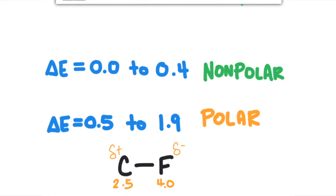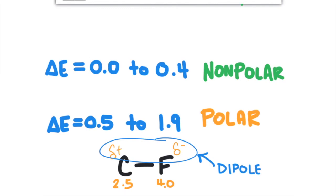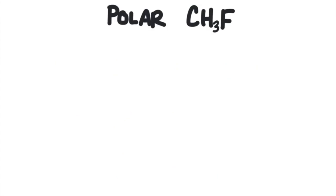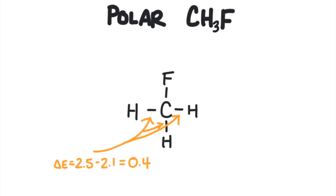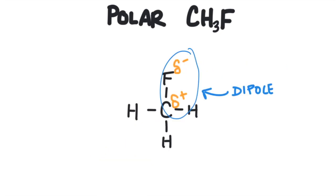A molecule could have polar bonds but be non-polar overall. To be polar, the molecule must have an overall dipole — a dipole means separation of charge, where one side of the molecule has a slightly negative charge and the other side is slightly positive. Here's an example of a polar molecule: CH3F. Carbon and hydrogen form non-polar bonds, but carbon and fluorine form polar bonds. The delta E between carbon and hydrogen is 0.4, and the delta E between carbon and fluorine is 1.5, which makes a polar bond. So since we have a dipole in this molecule — separation of charge — this molecule is a polar molecule.